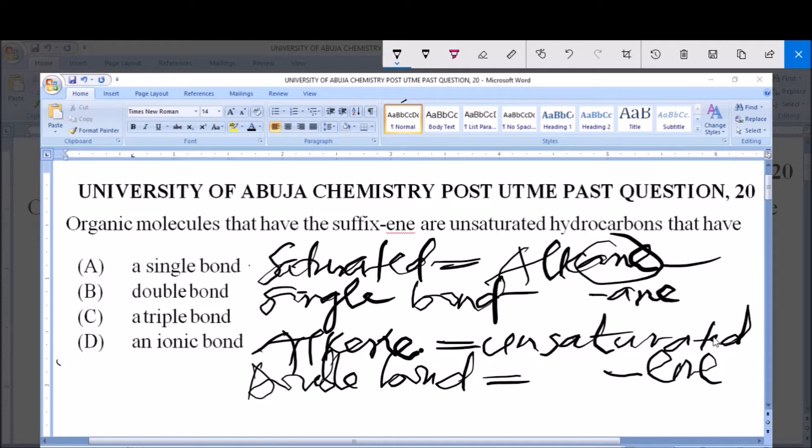Also, we have alkyne. The alkyne is unsaturated too. It has a triple bond and maintains the suffix -yne. So we have alkane, alkene, and alkyne.